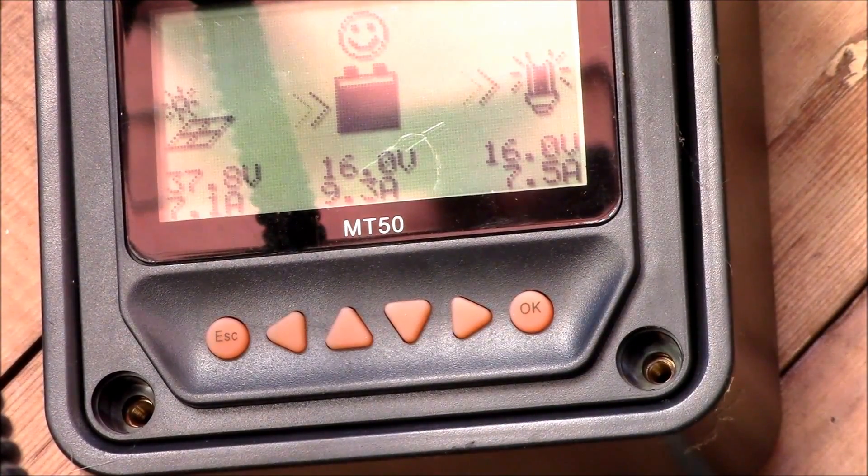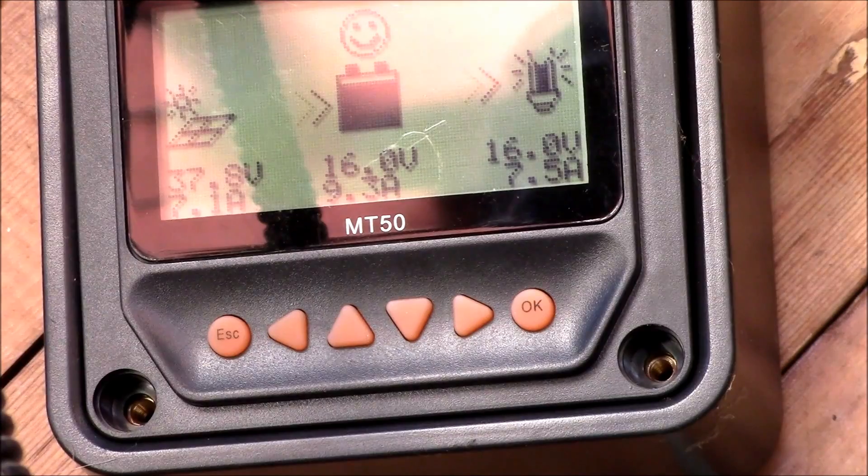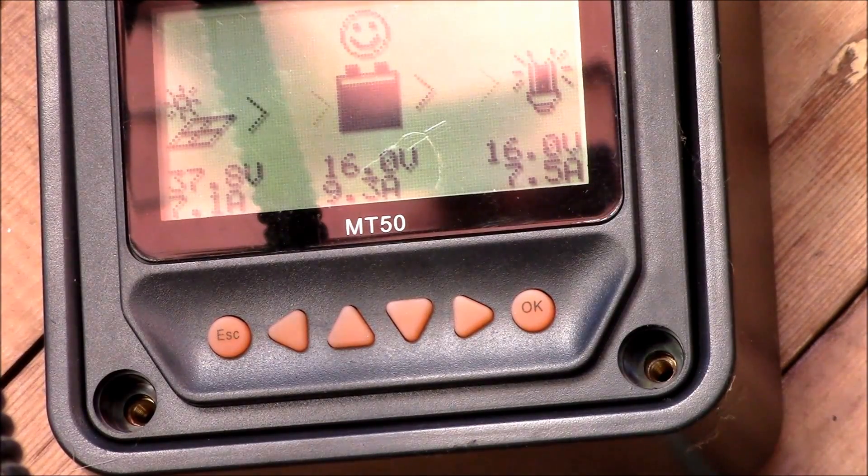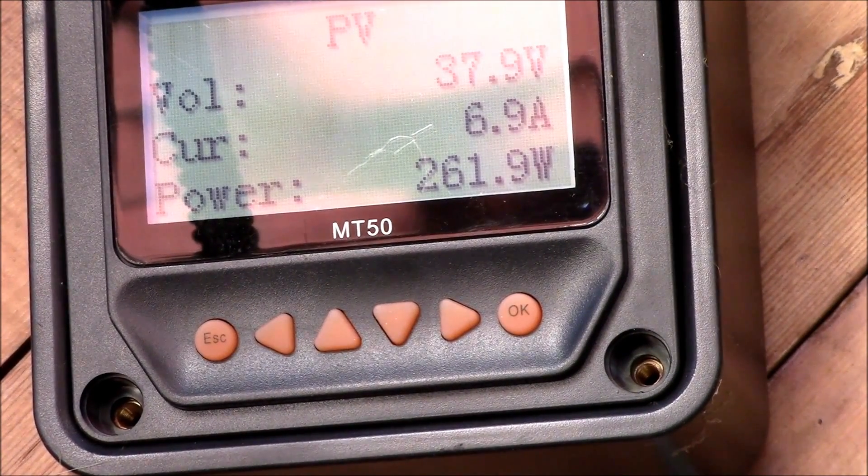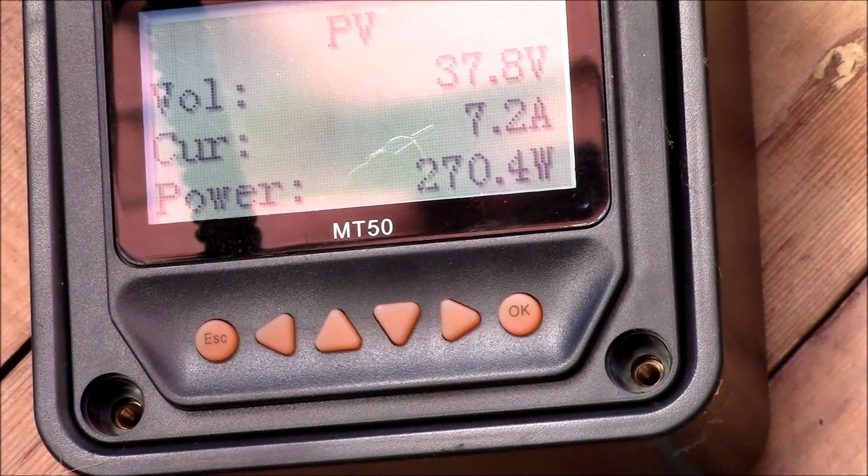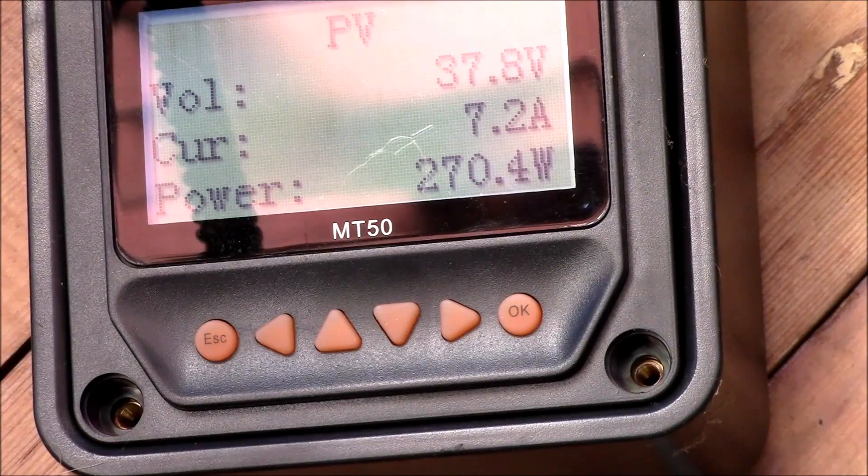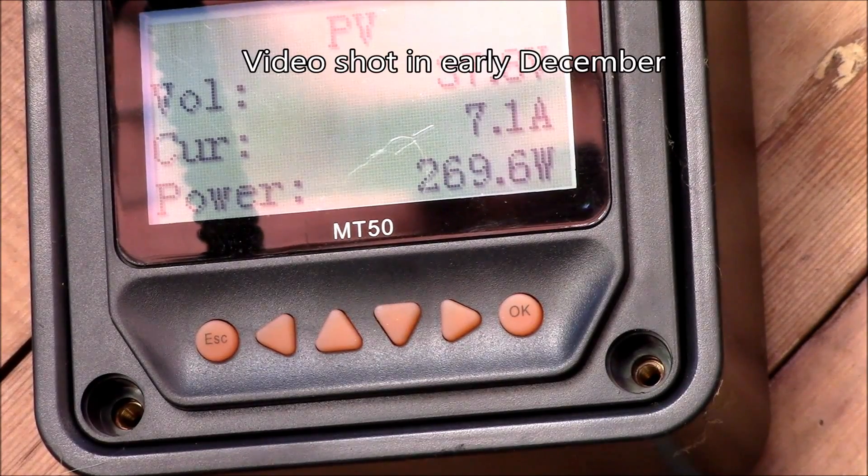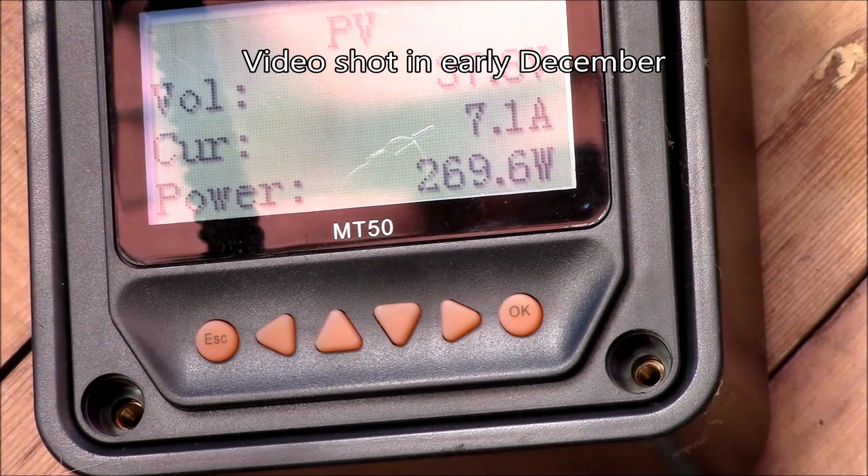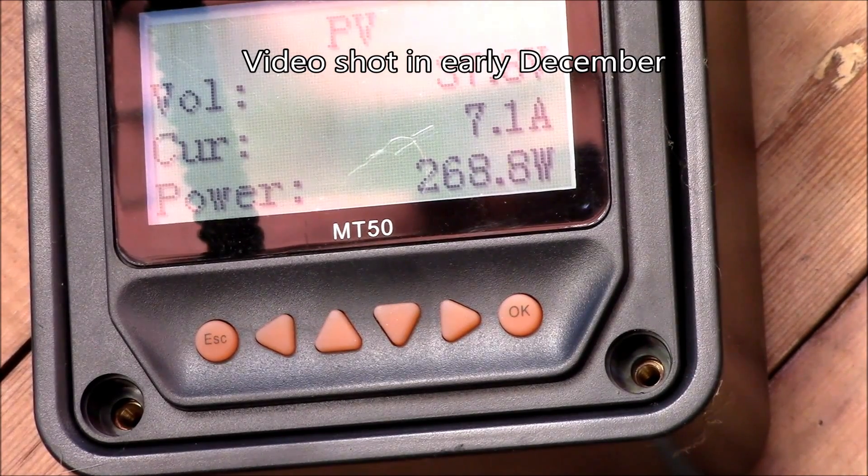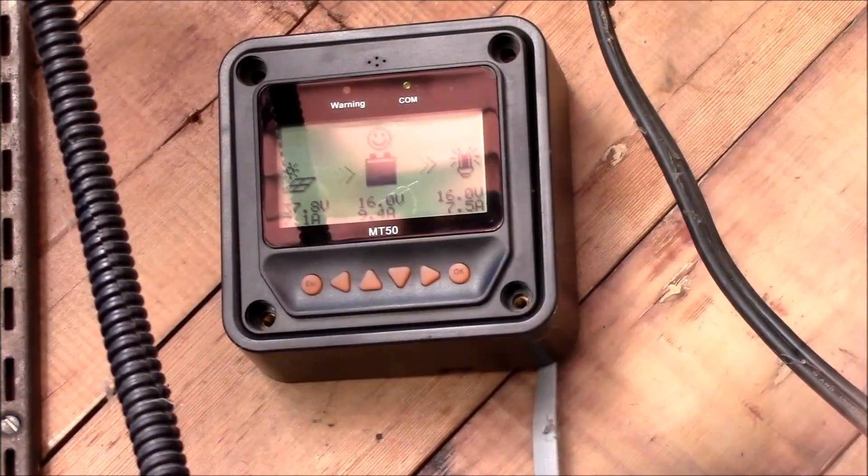There's the lithium charge controller. I got that one on the newer charge controller that I have with the lithium battery profile. Let's see, we're getting 37.8 volts and seven amps coming in, 261 watts, 270. It's a little late in the afternoon, like 2:30, and pretty soon the sun's going to be going over the side of the house so we're getting pretty low sun angle here.